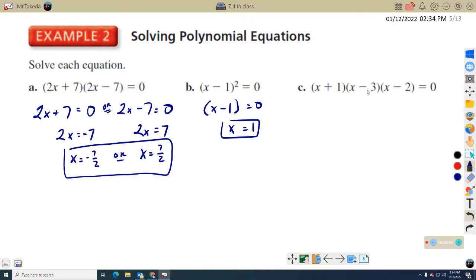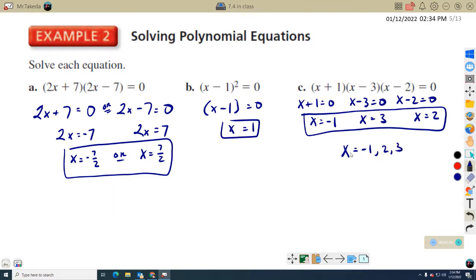I have three different X's here. So X plus one equals zero, X minus three equals zero, X minus two equals zero. So X equals negative one, X equals three, and X equals two. It doesn't matter what order it's in, but you can just like list them like that if you wanted to.